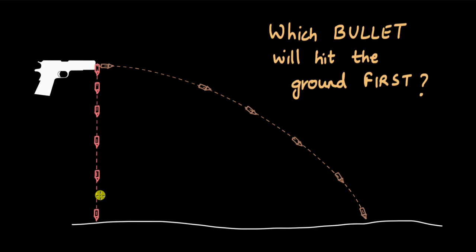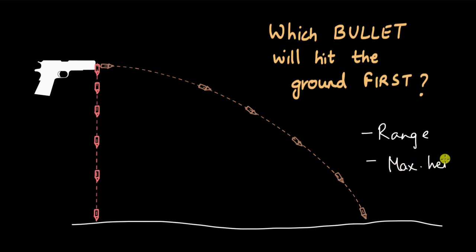But before we do that, we will jump into analyzing projectile motion and try to understand how to solve any projectile motion problem mathematically. As we do that, we will come across some new words such as range. We will also derive a formula for maximum height in a projectile motion, and also the time it takes for the object to complete its motion.